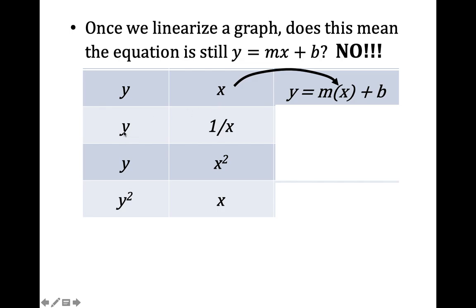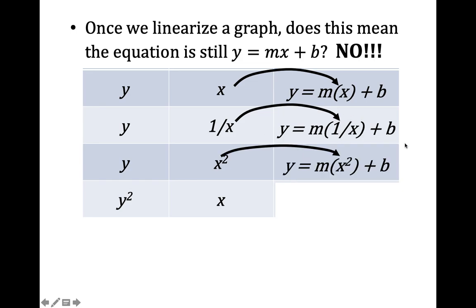But now if we change that, we're graphing y versus 1 over x, we can use y equals m times 1 over x because this is the variable on our horizontal axis. So whatever is on the horizontal axis needs to go in the x position in y equals mx plus b. And you'll see a pattern here where we're replacing whatever we changed with the new variable. So we would put the new physics variable, whether it's squared or square root or whatever it is, in the spot in the equation.